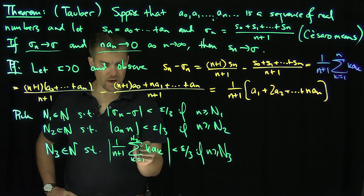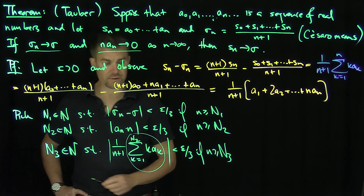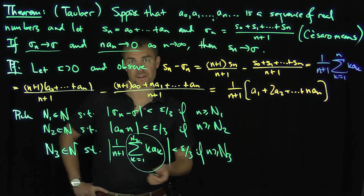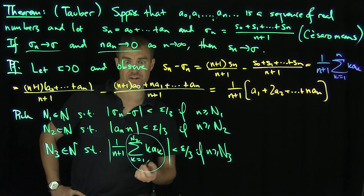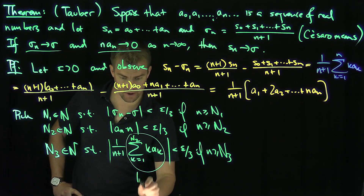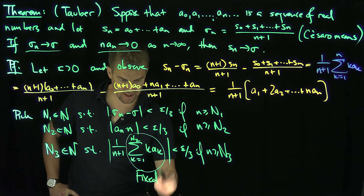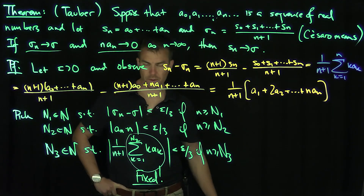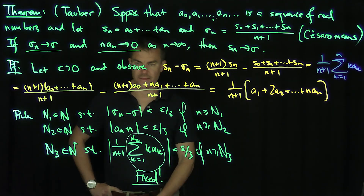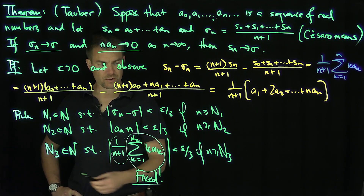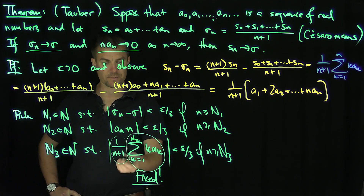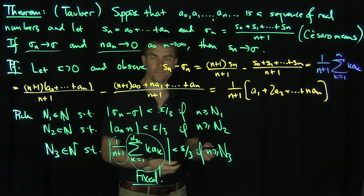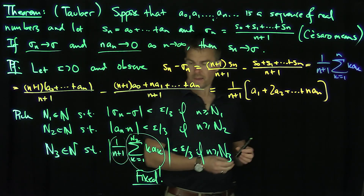We can do this because as n → ∞, N_2 is fixed, so the sum from 1 to N_2 is a fixed finite number, and dividing by (n+1) makes this expression go to 0. So we can make this expression as small as we wish.